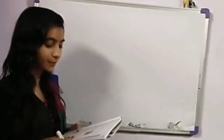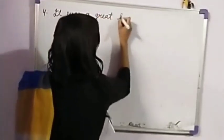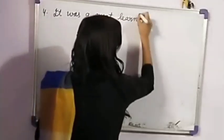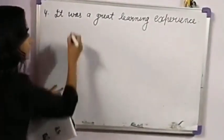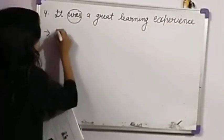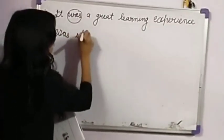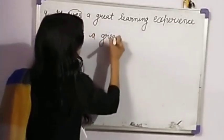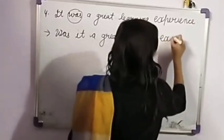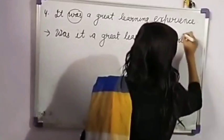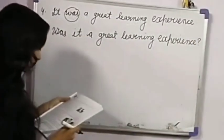Fourth is: 'It was a great learning experience.' So 'was' is a helping verb. So the answer will be: 'Was it a great learning experience?' And in last, question mark.